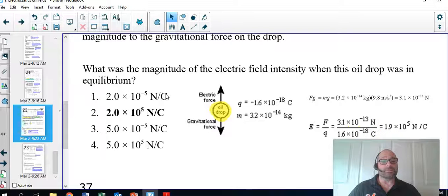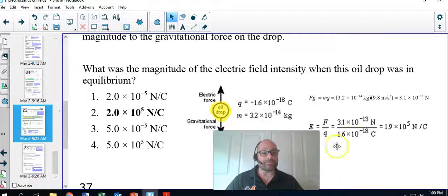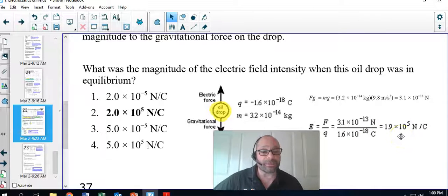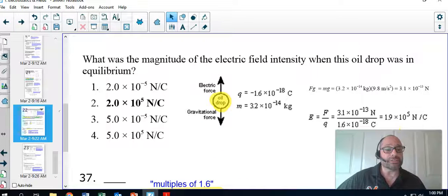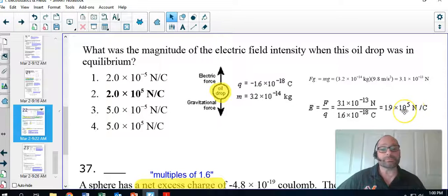Put it right here, do the simple division, and the next thing you know, you have successfully computed the strength of the electric field, F divided by Q, to be 1.9 times 10 to the fifth Newtons per Coulomb.